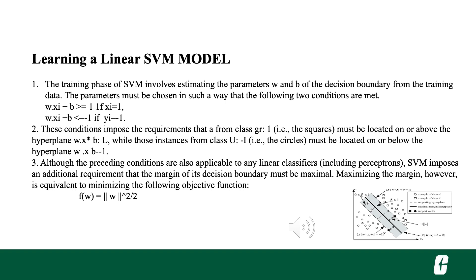In learning a linear SVM model, the training phase involves estimating the parameters w and b of the decision boundary from the training data. The parameters must be chosen such that: w dot x_i plus b is greater than or equal to 1 if y_i equals 1, and w dot x_i plus b is less than or equal to minus 1 if y_i equals minus 1.